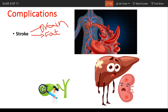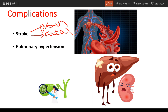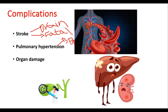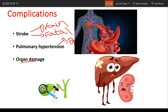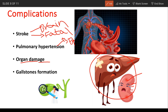People with sickle cell anemia can develop high blood pressure in the lungs — that is pulmonary hypertension — which usually affects adults rather than children and can be fatal. Shortness of breath and fatigue are common symptoms. Chronic deprivation of oxygen-rich blood can also damage nerves and organs including your kidney, liver, and spleen. The breakdown of RBCs produces bilirubin, and a high level of bilirubin can lead to gallstones.